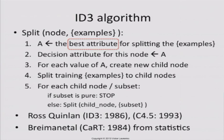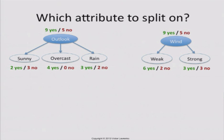So now let's talk about the angel — how do we select the best attribute? Because that's really the crux of it. The rest of it is trivial, the rest of it is simple. So how do you pick the best attribute?